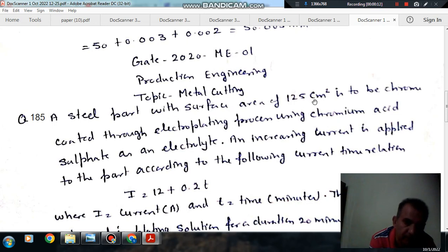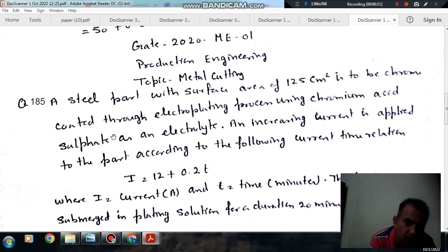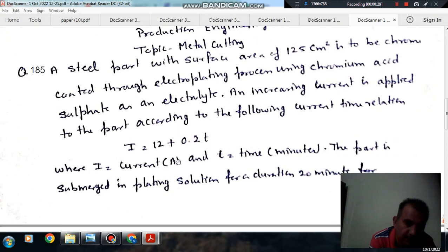A steel part with surface area of 125 cm squared is to be chrome coated through electroplating process using chromium acid sulfate as an electrolyte. An increasing current is applied to the part according to the following current time duration.